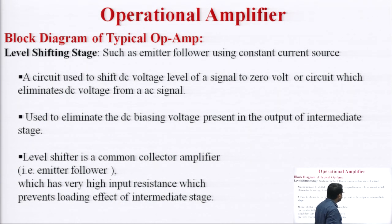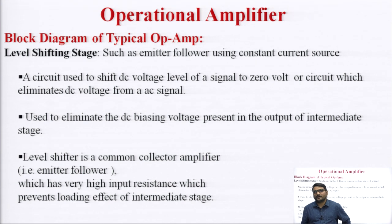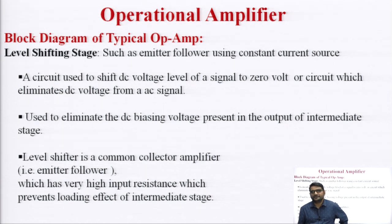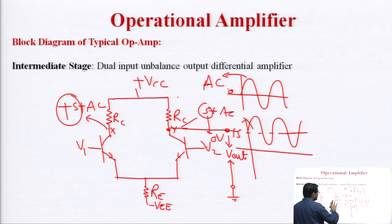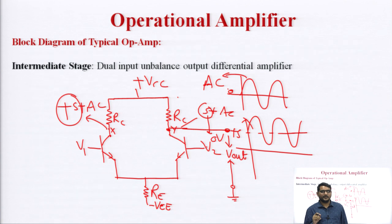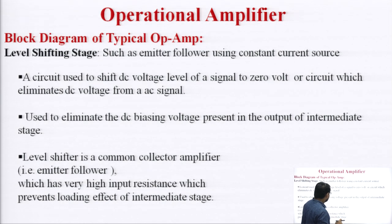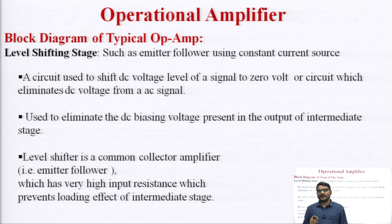The level shifting stage uses an emitter follower with a constant current source. Its purpose is to shift the DC voltage level of a signal to 0 volts — eliminating the DC biasing voltage present in the output of the intermediate stage. The level shifter is a common collector amplifier (emitter follower) which has very high input resistance and prevents the loading effect of the intermediate stage.